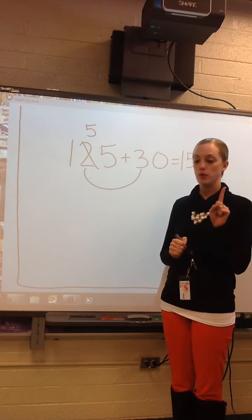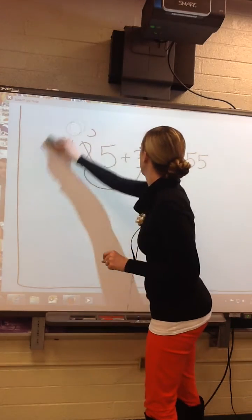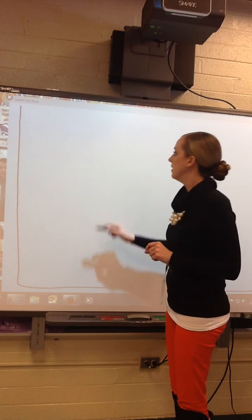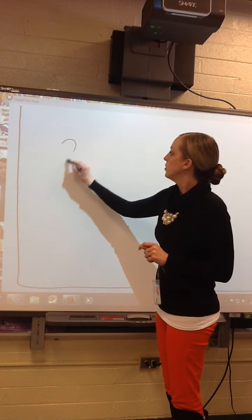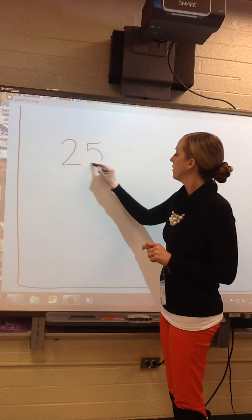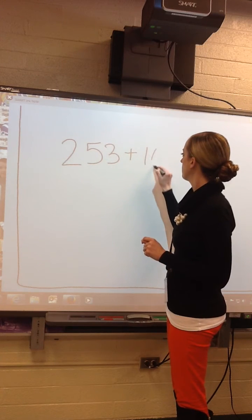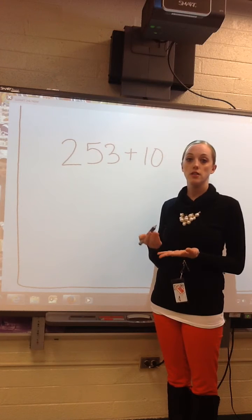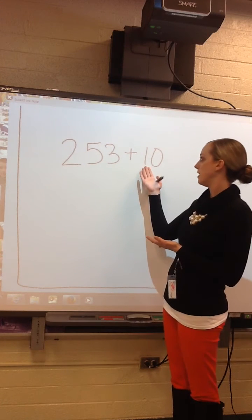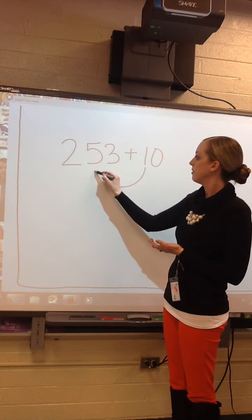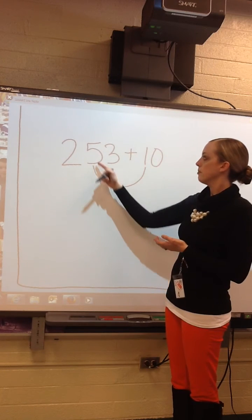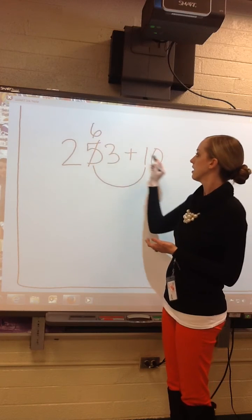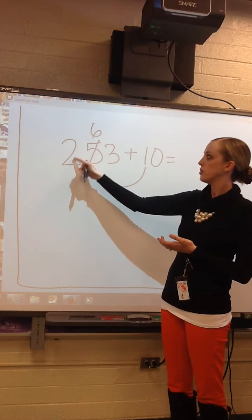Okay, I'm going to do one more. I had 253 plus 10. Again, say, what am I adding? Hundreds, tens, or ones? In this case, I'm adding tens. 1 ten plus 5 tens, which is 10 plus 50 is 60. So my sum is 263.